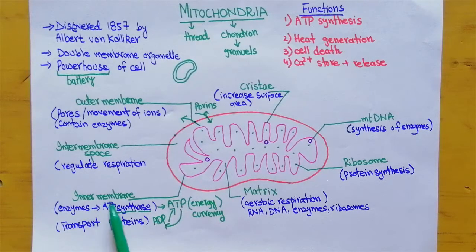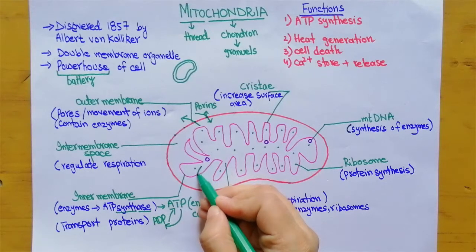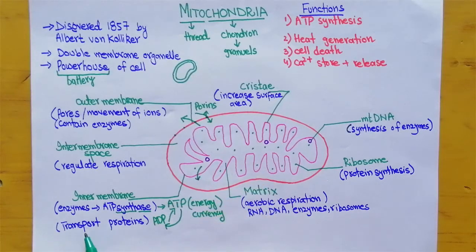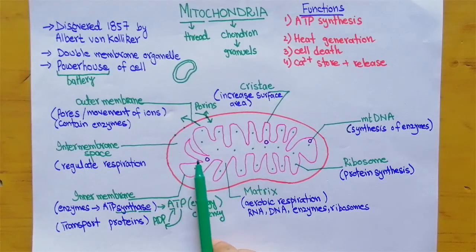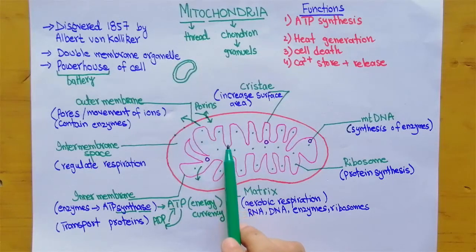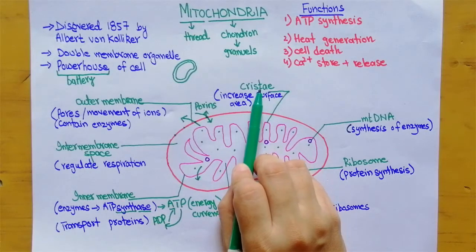Another function of the inner membrane is the transport of proteins produced inside the mitochondria to the outside of the inner membrane. The inner membrane is not as smooth as the outer membrane — it has many curves or folds, just like the wrinkles present on skin. These folds are known as cristae.